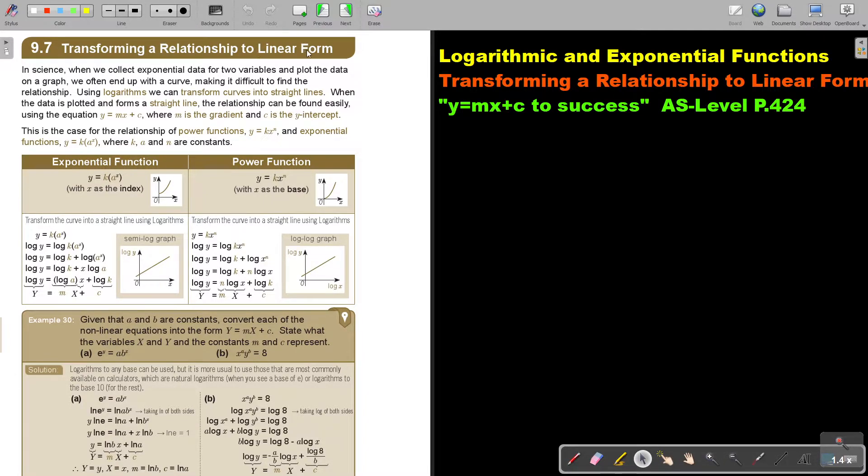Transforming a relationship to linear form. In science, when we collect experimental data for two variables and plot the data on a graph, we often end up with a curve, making it difficult to find the relationship. Using logarithms, we can transform curves into straight lines.